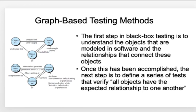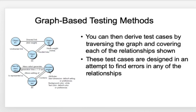One technique for black box testing is graph-based testing. In this method, objects modeled in software and their connections — showing the relationships between objects — are represented as a graph. Test cases are derived by traversing the graph and covering each of the relationships shown between objects. The main objective of graph-based testing is to find errors in the relationships between objects.